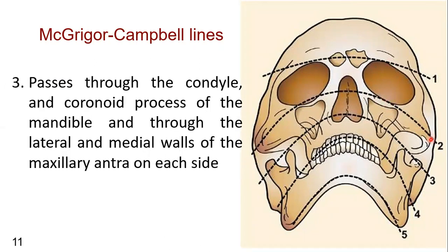The third line passes through the right condylar neck, right coronoid process, lateral wall of the antrum, and base of the nasal complex, then the lateral wall of the left antrum, left coronoid process, and left condylar neck.